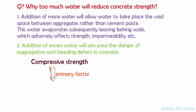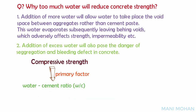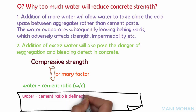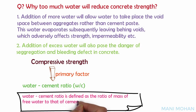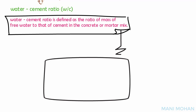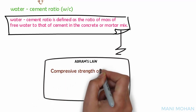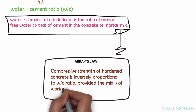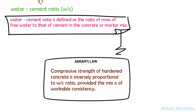The primary factor that influences the strength of concrete is the water-cement ratio. It is defined as the ratio of the mass of free water to that of cement in a mix. Note that free water excludes water absorbed by the aggregate. The compressive strength of hardened concrete is inversely proportional to the water-cement ratio, provided the mix is of workable consistency.